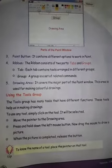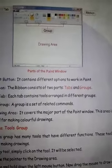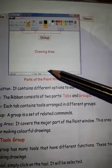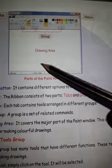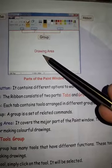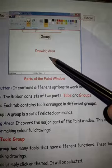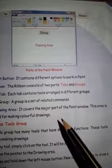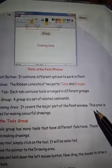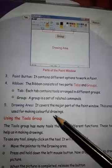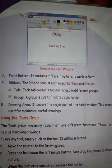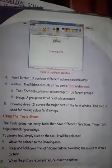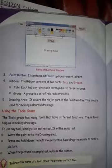Next is the Drawing Area. The Drawing Area is the major part of the Paint window where we can draw any picture. This area covers most of the Paint window and is used for making colorful drawings.